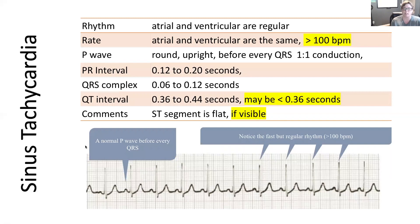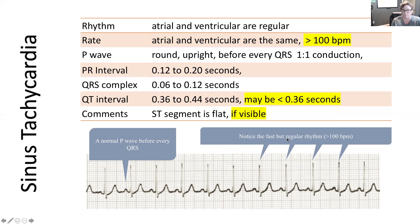The key features to look for: a normal P wave — round and upright — indicating the SA node is in charge. When the P wave changes shape, someone else is driving. There will be one P wave for every QRS, and the rate is simply fast, greater than 100. For our assessment elements: both atrial and ventricular rhythm will be regular; rate will be greater than 100; PR interval will be normal; QRS complex will be normal; QT interval may be shorter than 0.36 seconds or within normal range — if outside normal, calculate a corrected QT; and the ST segment will be flat if visible.